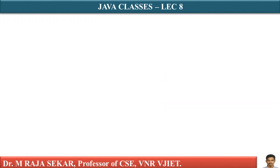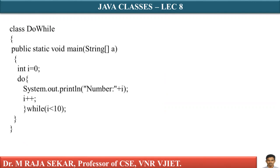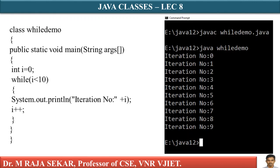Now let's look at do-while. Java also provides a do-while statement. The while loop tests a condition before the loop is executed, so the body of the loop may not execute at all. This is why while is known as an entry control loop — the condition is checked before entering the body.